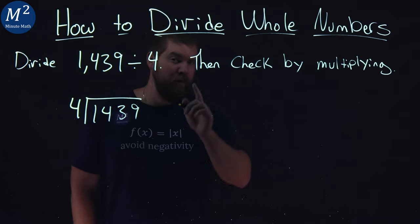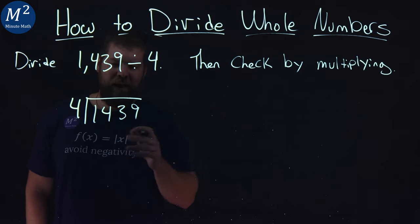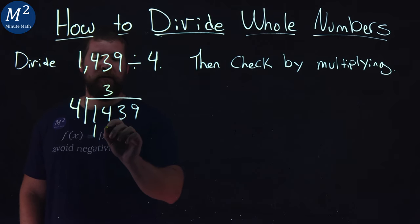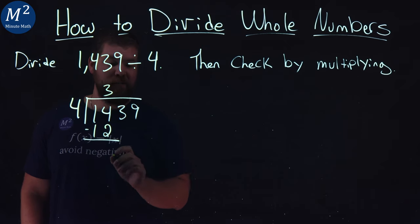Now this one is a tricky problem, just so you know. 4 goes into 1, can't do that. 4 goes into 14, though, 3 times. 3 times 4 is 12. We subtract the two numbers. 14 minus 12 gives me 2.